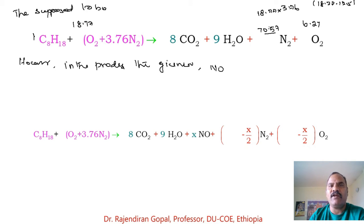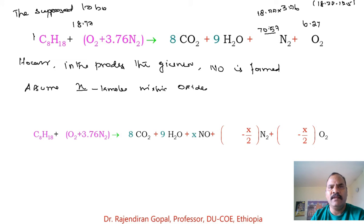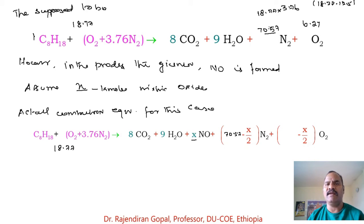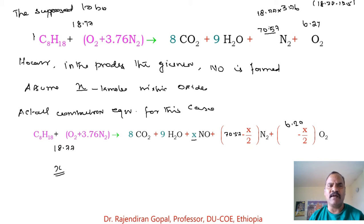However, since the products also contain nitric oxide, we must include NO in the combustion equation. Assuming X kilomoles of NO in the products, the actual combustion equation becomes: C8H18 + 18.77(O2 + 3.76 N2) → 8 CO2 + 9 H2O + X NO + (70.57 − X/2) N2 + (6.27 − X/2) O2. X is unknown and cannot be found simply by equating coefficients, so we need an alternative approach.